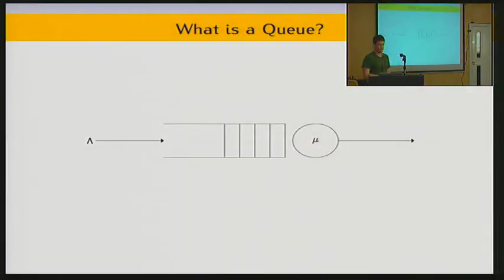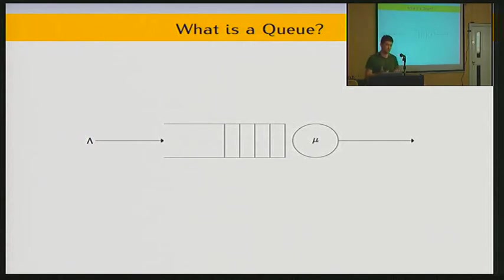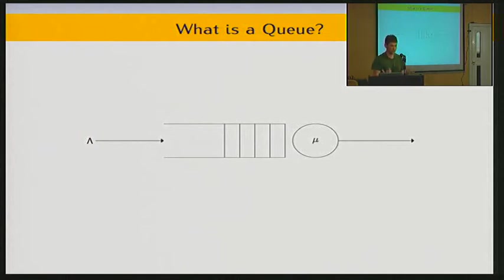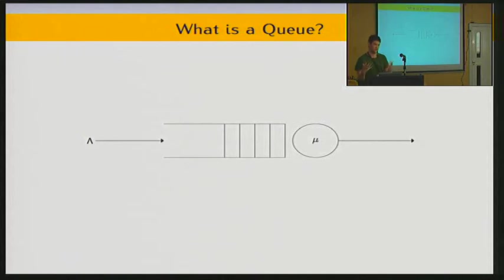So, what actually is a queue? We have customers arriving randomly, but at a rate of about lambda every time unit. They join a queue, they wait in line, and once they're at the front of the line they spend some time with a server — a service time which is random but derived from a distribution — and then they leave. These are the building blocks of these queuing systems.